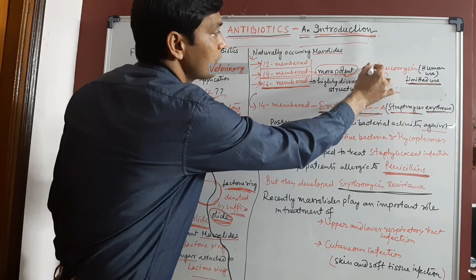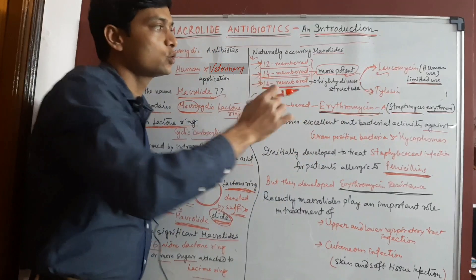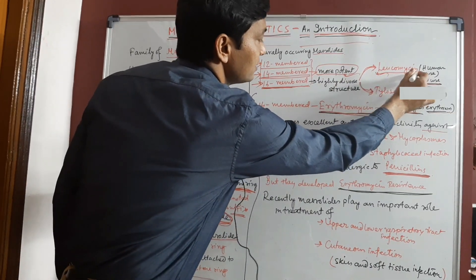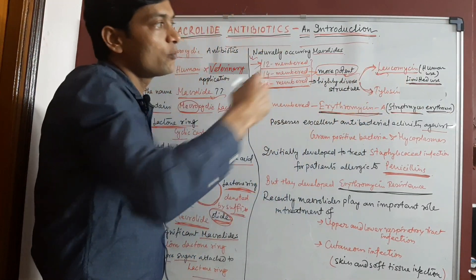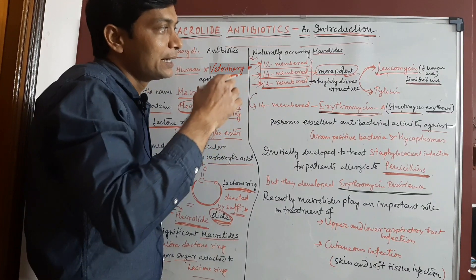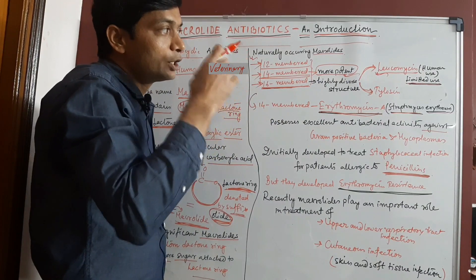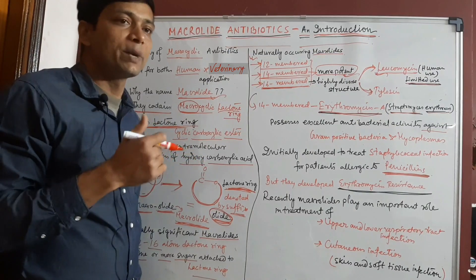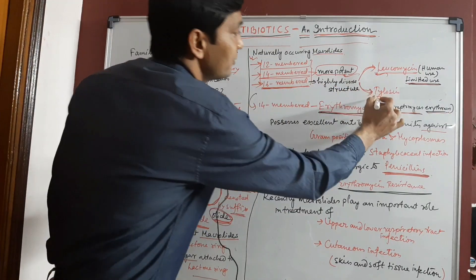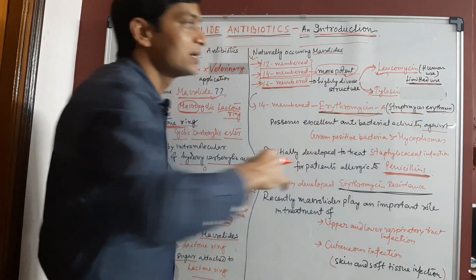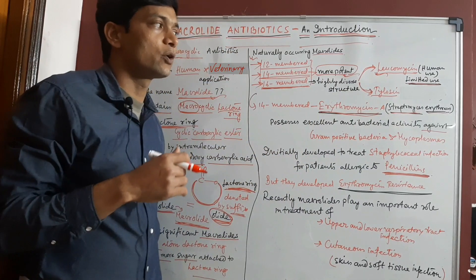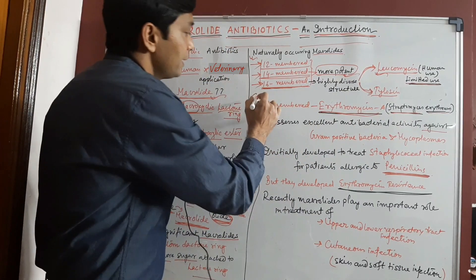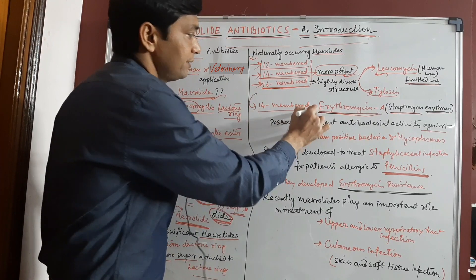The 16-member macrolides can be grouped into two groups: leucomycin, which is basically used for human applications, and tylosin, which is basically used for veterinary applications. Now turning to 14-member macrolides.